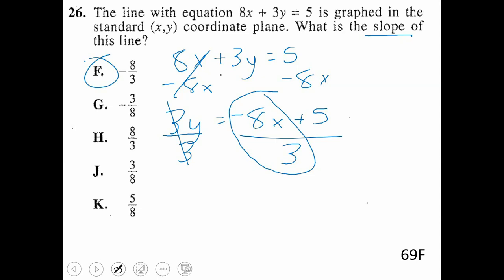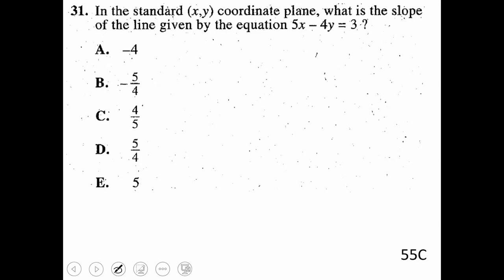One more of these. Just make sure we're all on the same page. You're looking for the slope, again, of the line with 5x minus 4y equals 3. We're going to need to minus the 5x. We're going to get y by itself. So we'd minus 5x to the right. That leaves us negative 4y equals,